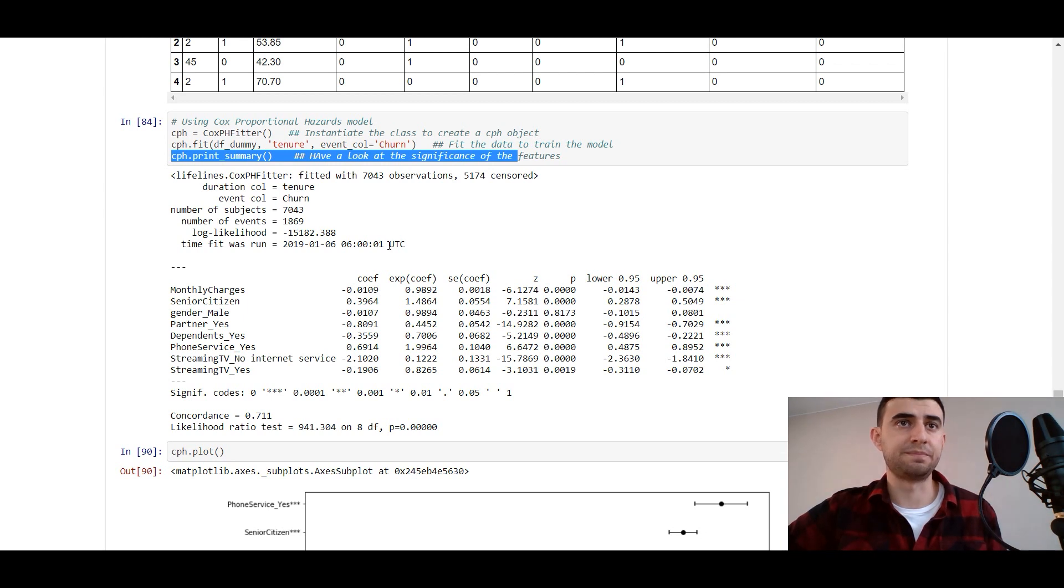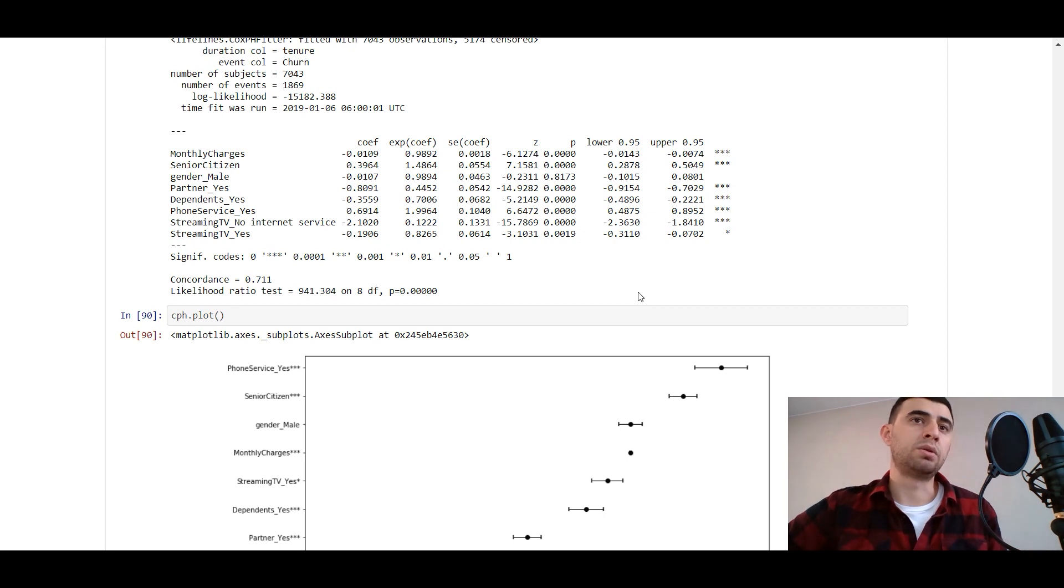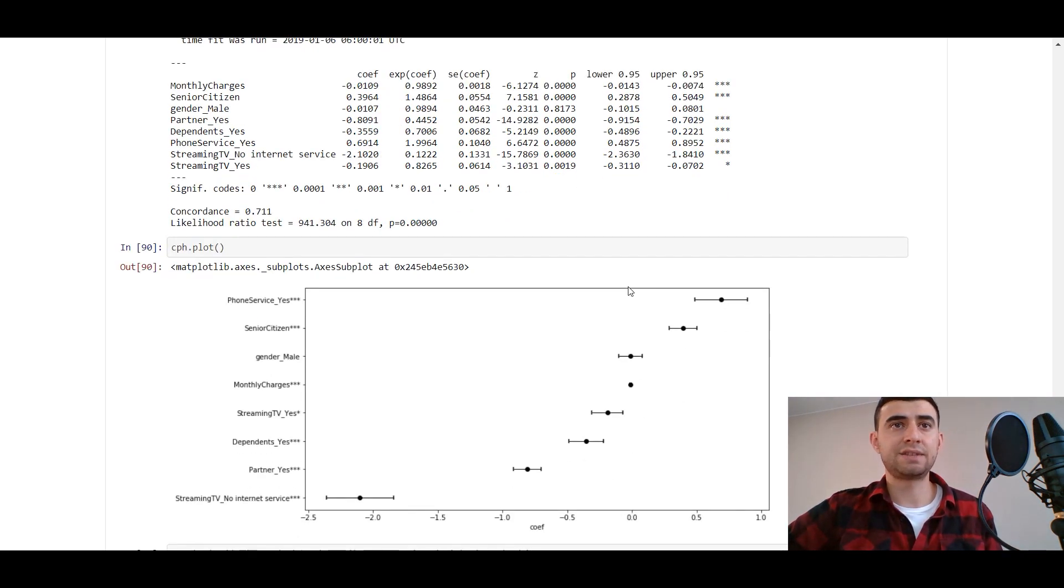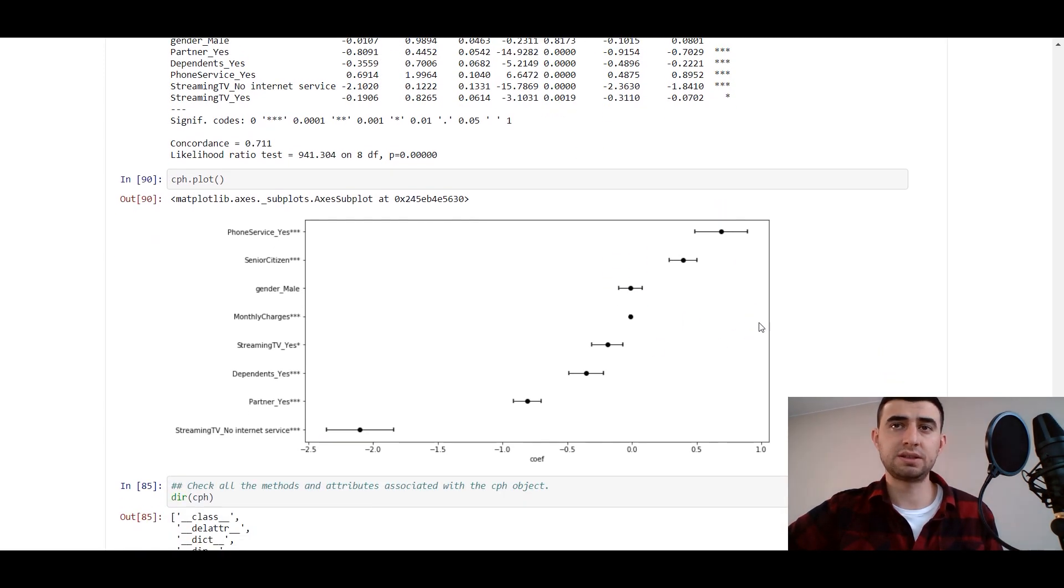Use df_dummy, tenure as time, and churn as label, and see the summary. Cox fitter would give us a dashboard on it, the summary with all the coefficients, the log likelihood, all the summary on data, p-value, and a lot of data. A must-have summary on the data. After that we can just plot it and see the influence and the coefficients. Streaming TV is very important, phone service is very important, and gender male is not important at all - the coefficient is zero.